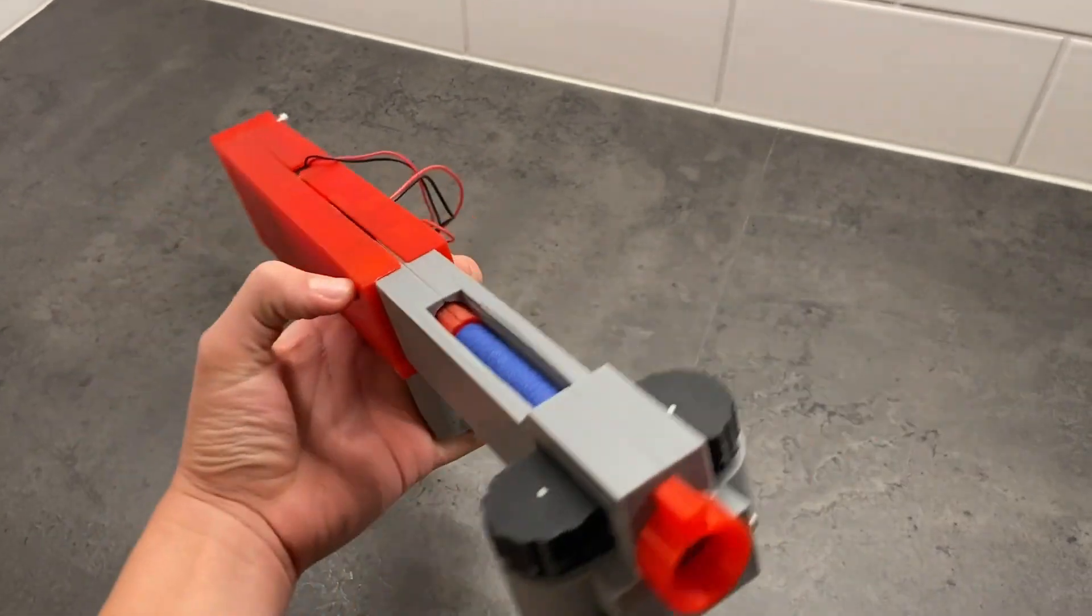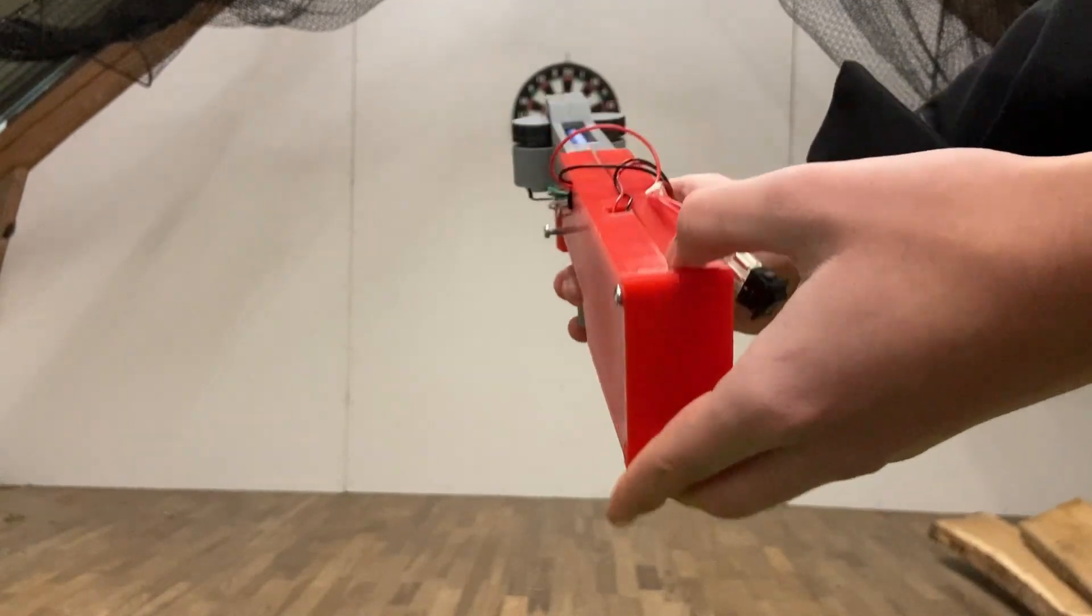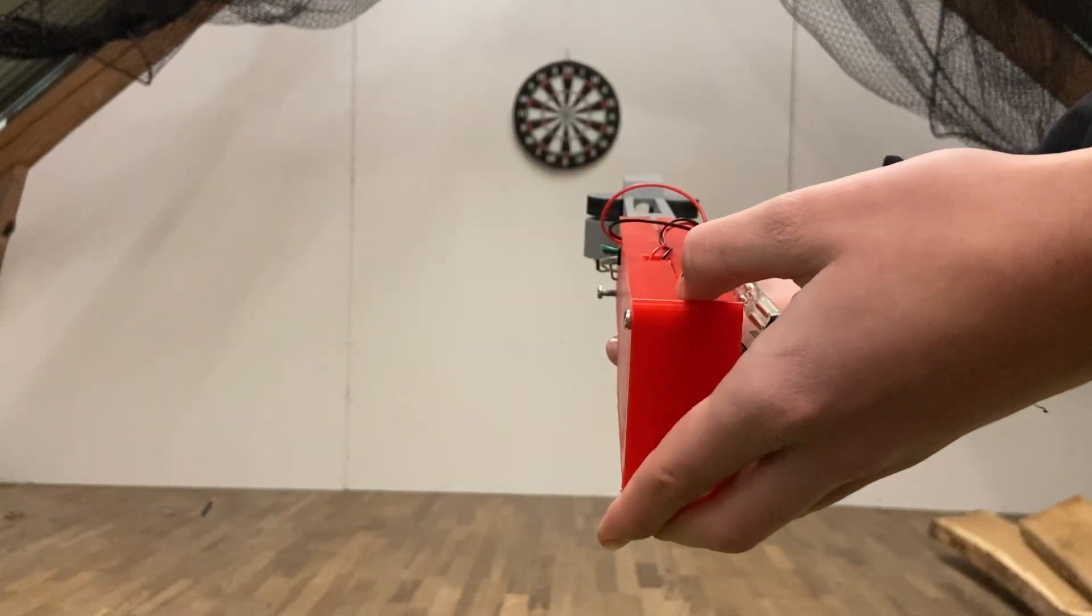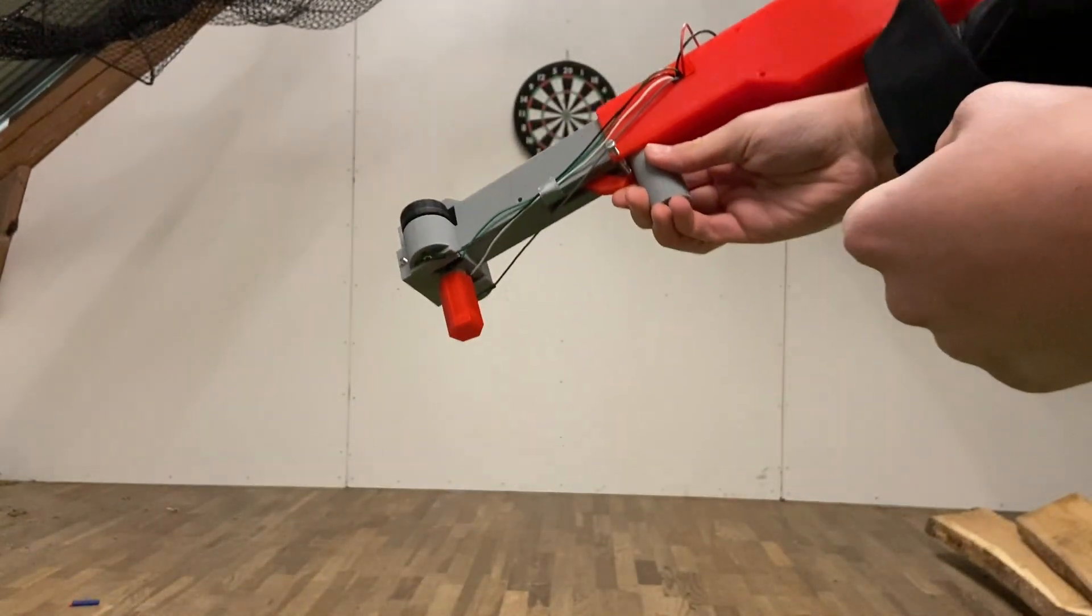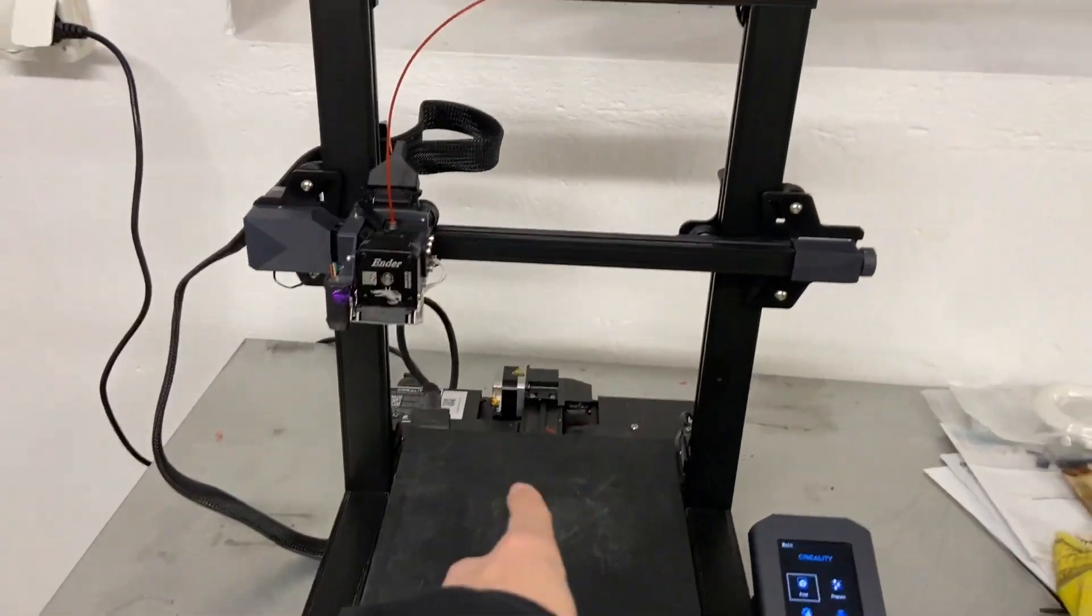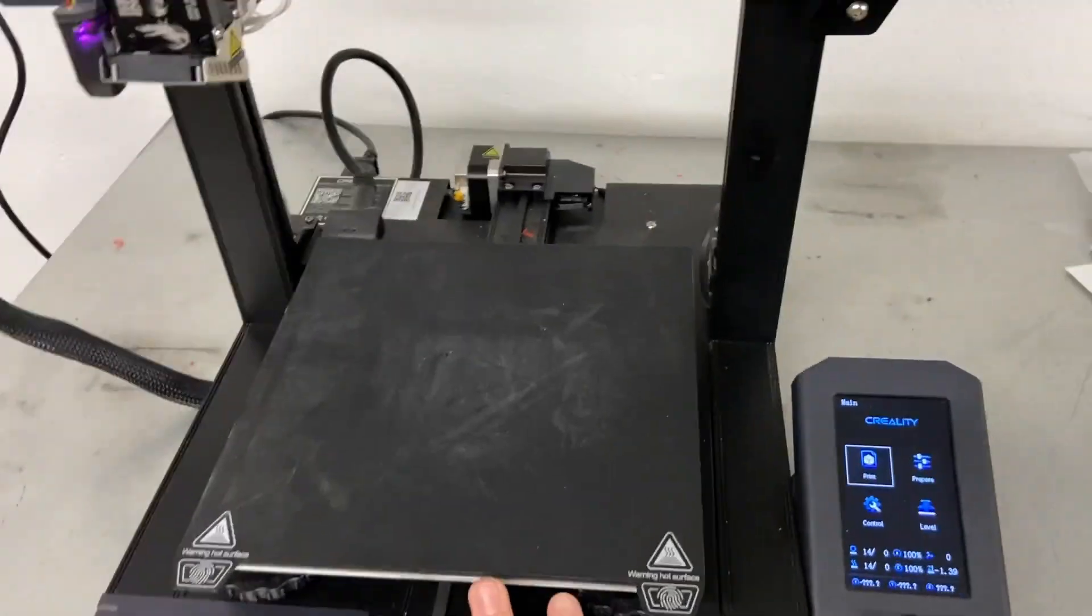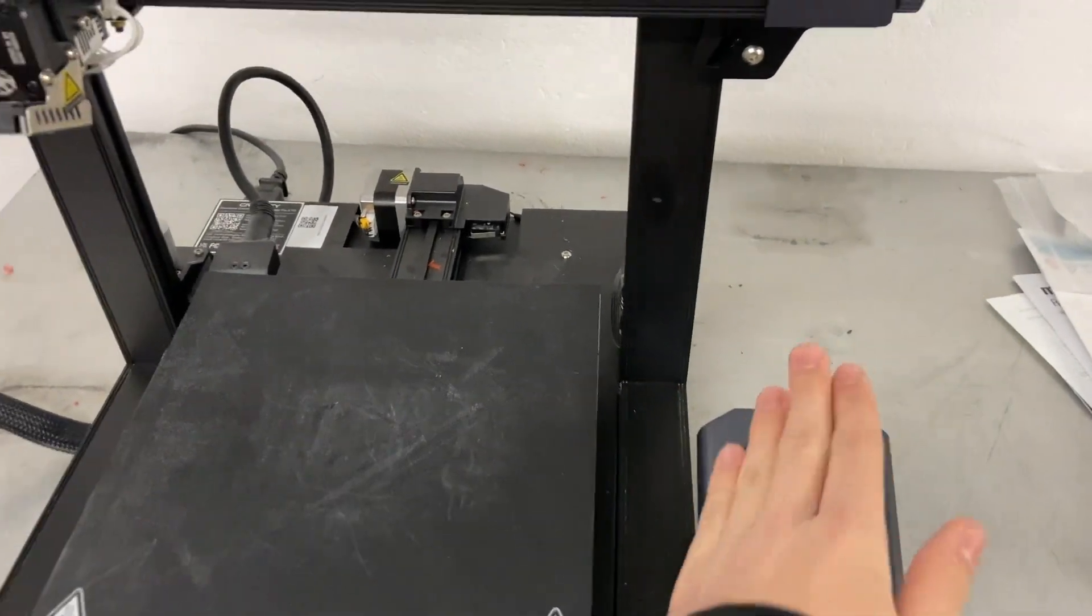In my last video, I built this 3D printed nerf gun. And yeah, it works. But it's kind of bad. It can only shoot one shot at a time and takes hours to reload. But no problem is too big for a guy who owns a 3D printer. At least that's what I'm trying to tell myself every day. But let's build a magazine.